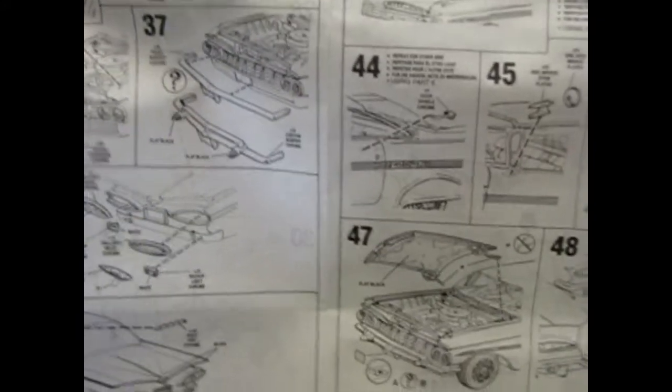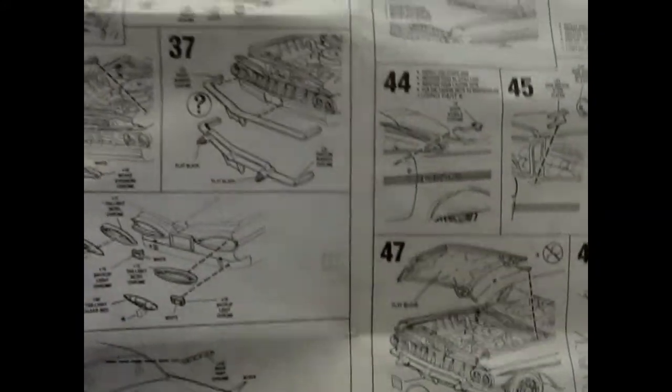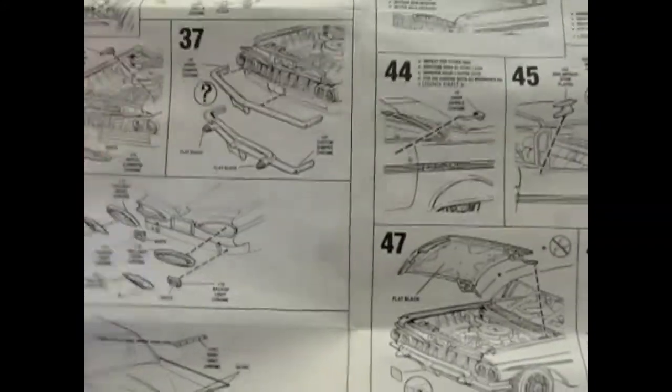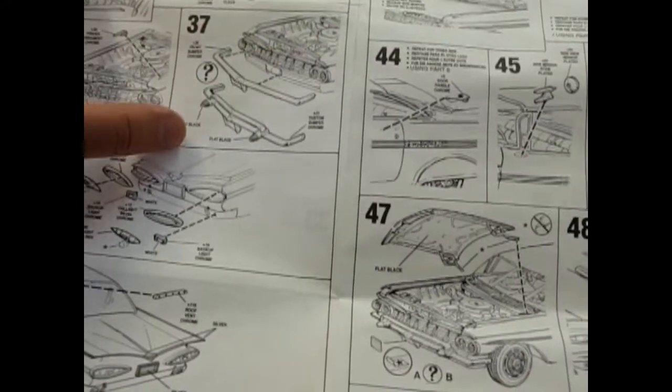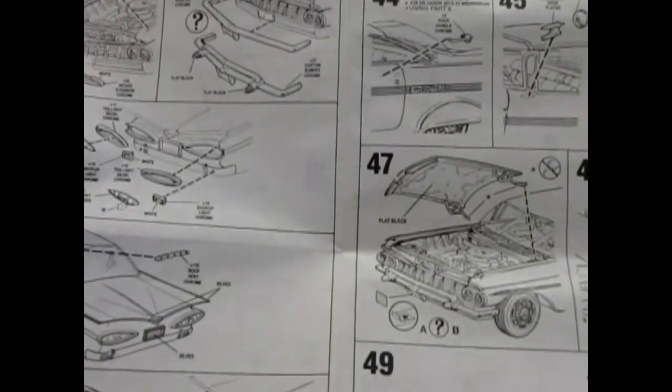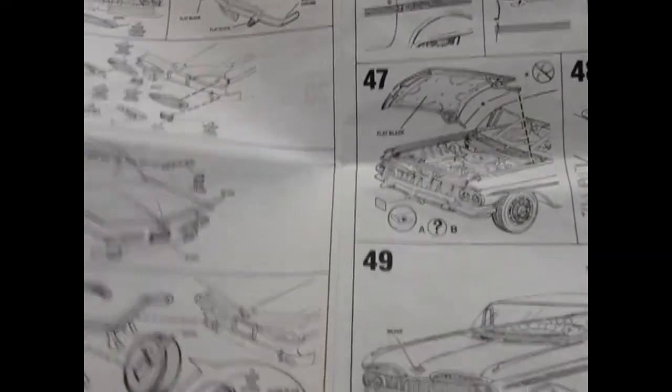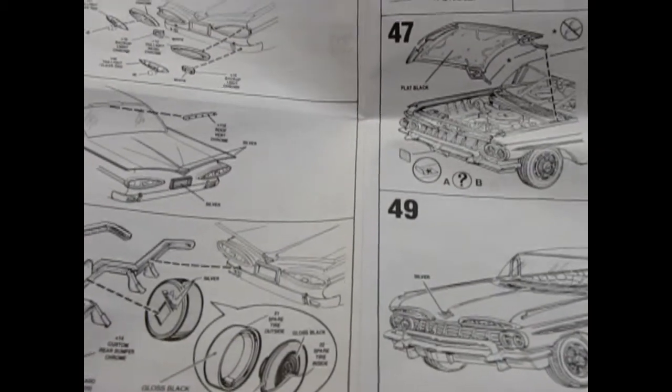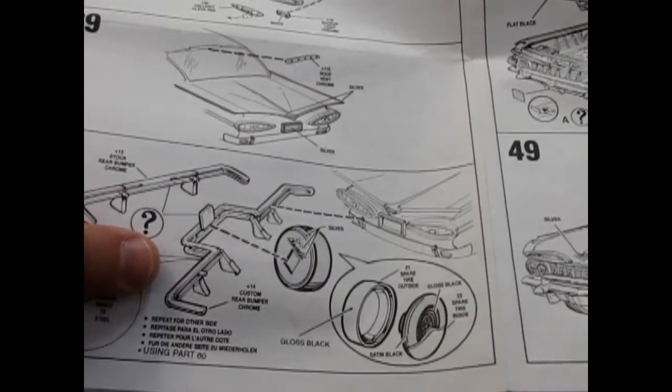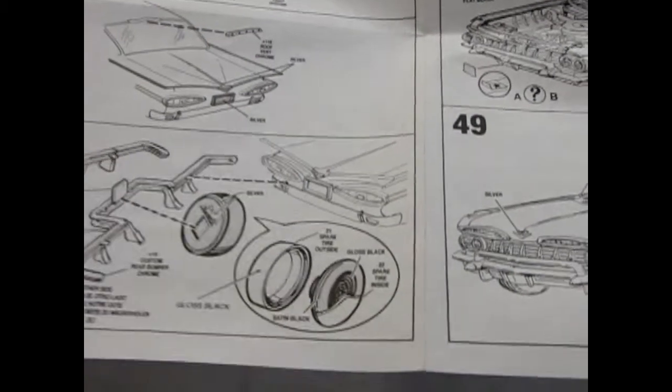And then the parts all going together. You do have optional bumpers in here. The regular stock bumper or the one with the overrides. Would actually be cool to have two of these kits. You also get your choice of a Continental kit onto the back. Or the regular stock bumper.